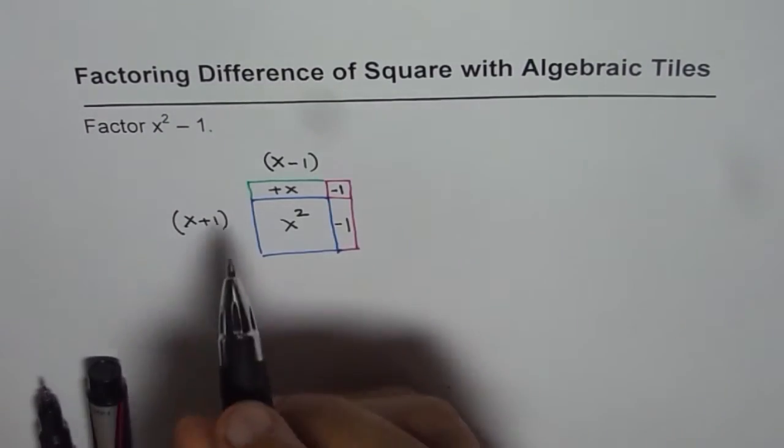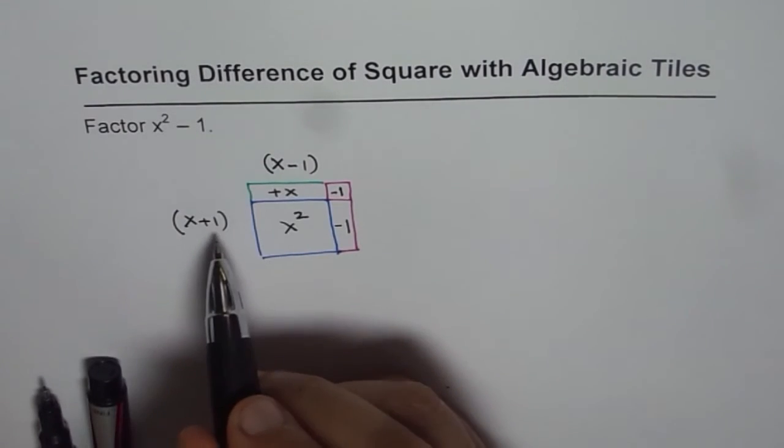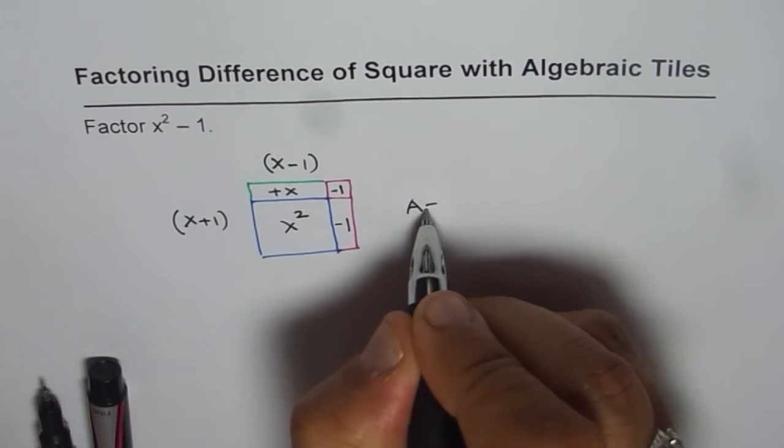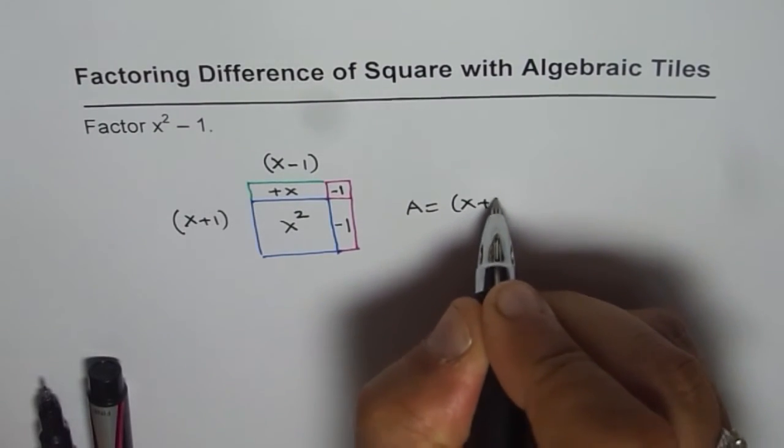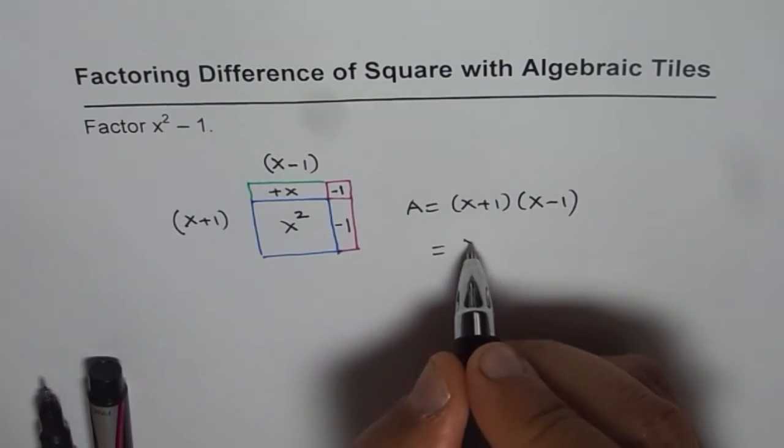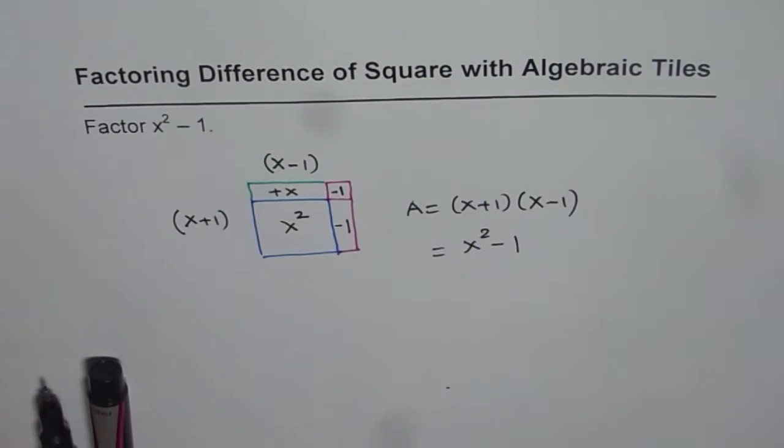Now area is product of these two. So we get area as equals to x plus 1 times x minus 1 and that is how you factor x square minus 1.